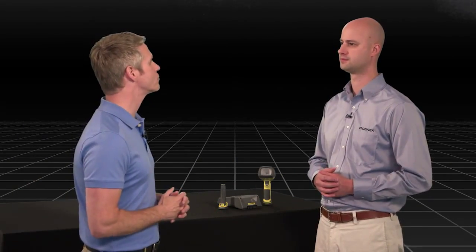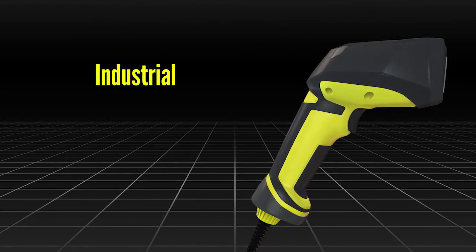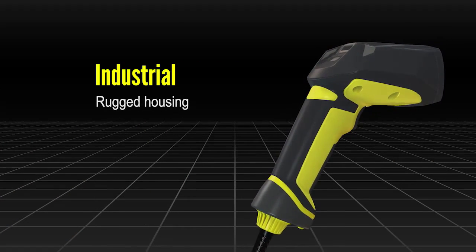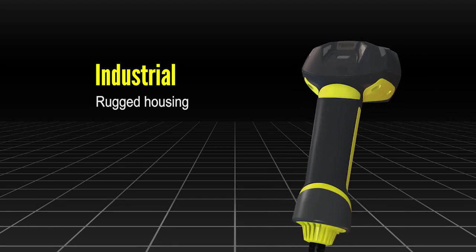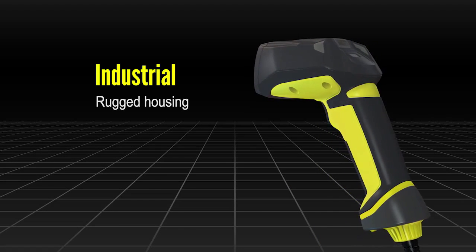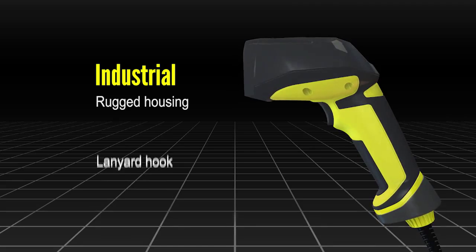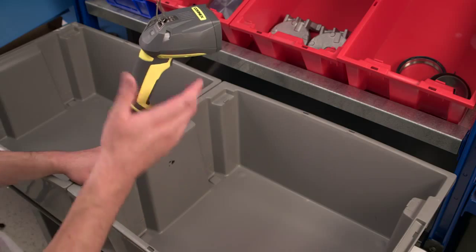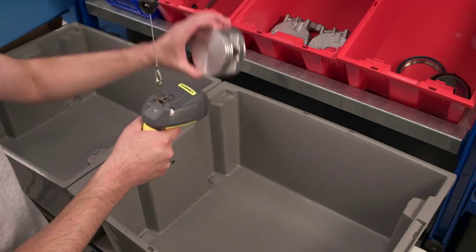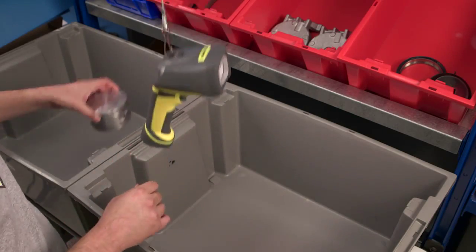Can you tell me about the industrial design features? Well, the first thing you'll notice is the ruggedized housing. That really makes sure that the reader is sturdy for the types of environments we sell into. Additionally, you'll notice it has a lanyard hook for easy retractor mounting, as well as a trigger button, but of course you can use presentation mode as well.